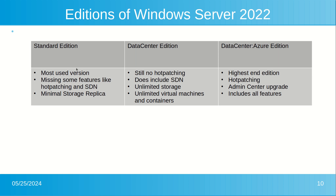Windows Server 2022 Standard edition is the primary and most popular version of the three. Although it includes all general features, it does not have hot patching and software-defined networking. The storage replica option is available but is limited to a 2TB partition and does not include storage spaces direct. It offers two virtual machines plus one Hyper-V host per license, along with two isolated containers. Host Guardian support is not available in this version.